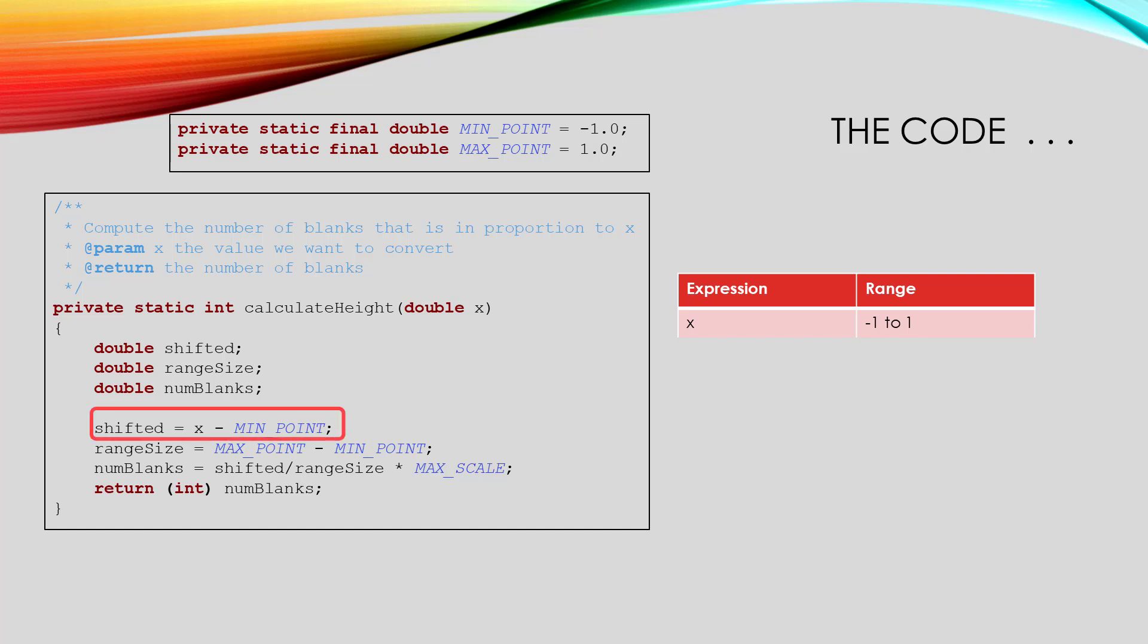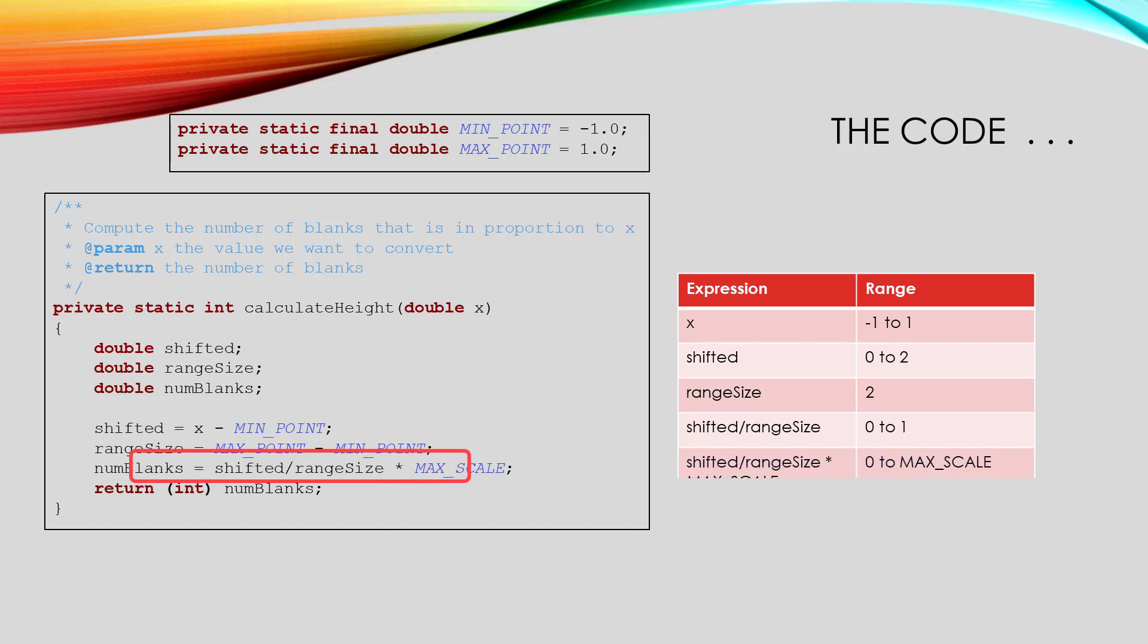The first step is to shift things over to make our smallest value be 0. We do that by subtracting the minimum value and storing that in shifted. Now our range is from 0 to 2. In order to narrow the range to be between 0 and 1, I want to divide by the width of the range. That width is the maximum point minus the minimum point. So, if we divide shifted by the range, we now have a value that is between 0 and 1. Multiply that by max scale, and we have a range of 0 to max scale. That's what we wanted, so return that.